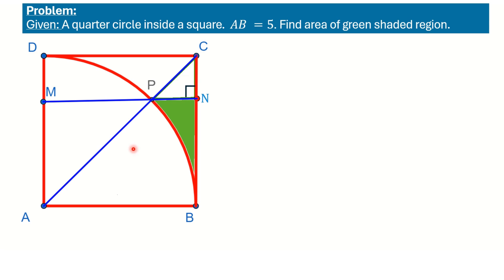In this problem, a square ABCD has been given. Inside this square we have a quarter circle. The side length of the square is given: AB equals 5 units. We have to find the area of the green shaded region.